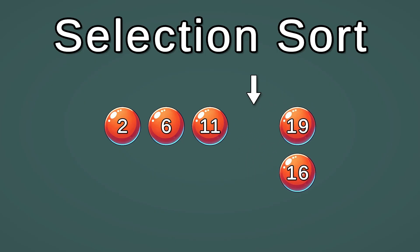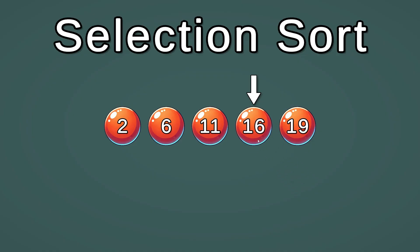So we put 19 in 16's place and 16 in 19's place. Like that, we are at the end of the array, which means our array is sorted.